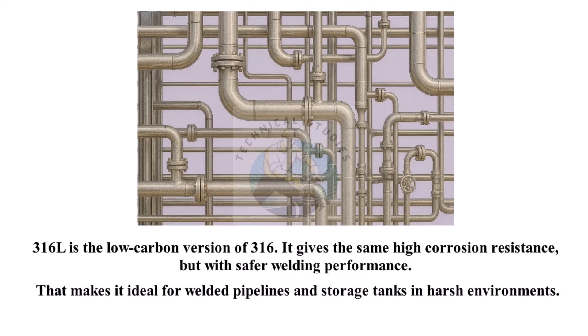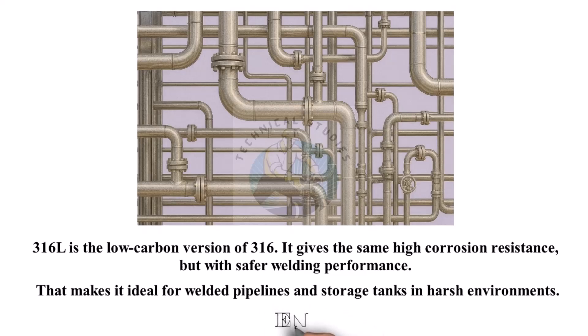So, in short: 304 is common and economical, 304L is for welding, 316 is for salt water and chemicals, and 316L is for welded equipment in tough conditions.